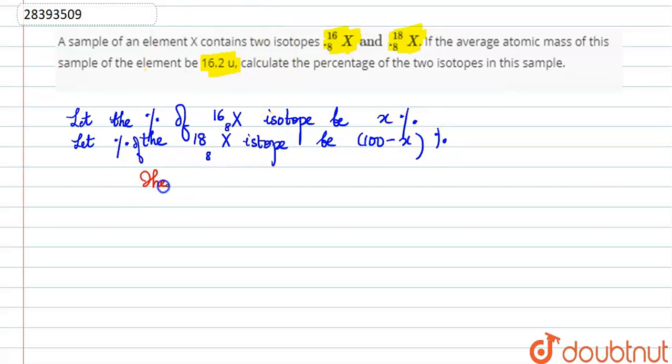Now see, the mass of 16X isotope - what is it? Mass is decided by the upper digit. So the upper digit is 16, so it will be 16u for its mass. And the mass of the 18X isotope will be 18u.